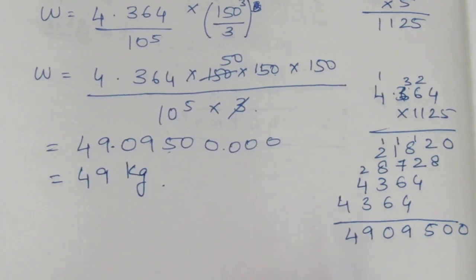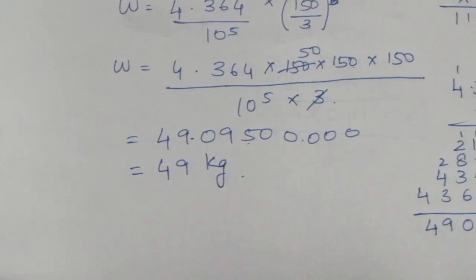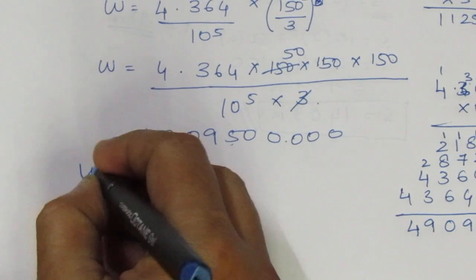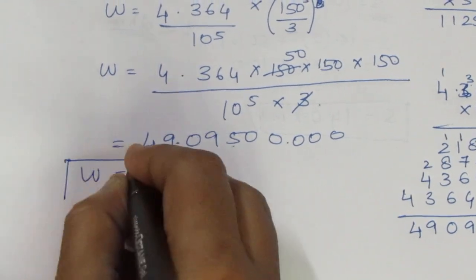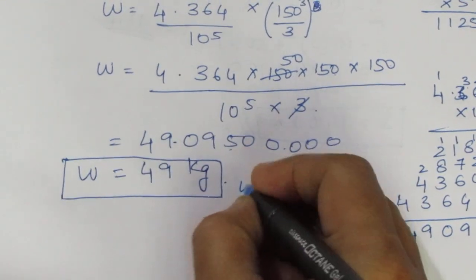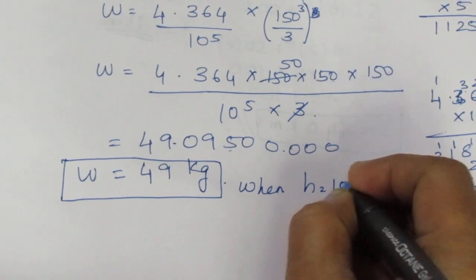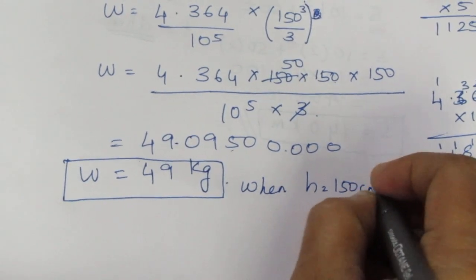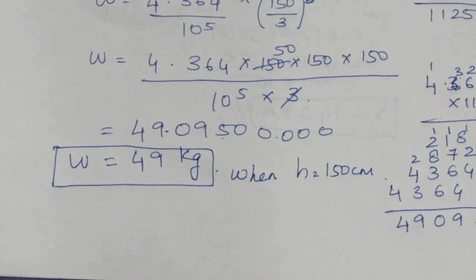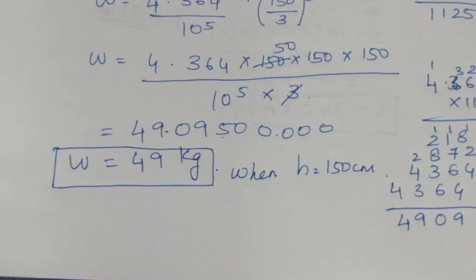So the weight is 49 kg when the height is equal to 150 cm. Weight W ≈ 49 kg. That is the calculated answer. Thank you.